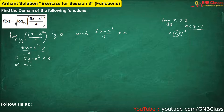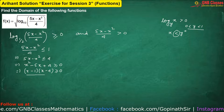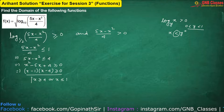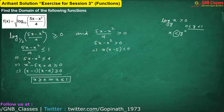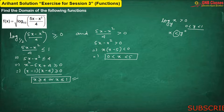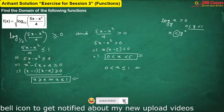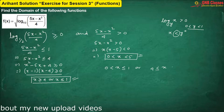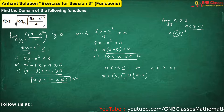After factorizing, from the number line we get the solution for the first inequality. From the second one we also use the number line. Now we have to find the common region between these two conditions. We can write x is greater than 0 and less than or equal to 1, or x is greater than or equal to 4 and less than 5. Therefore that is the required domain.